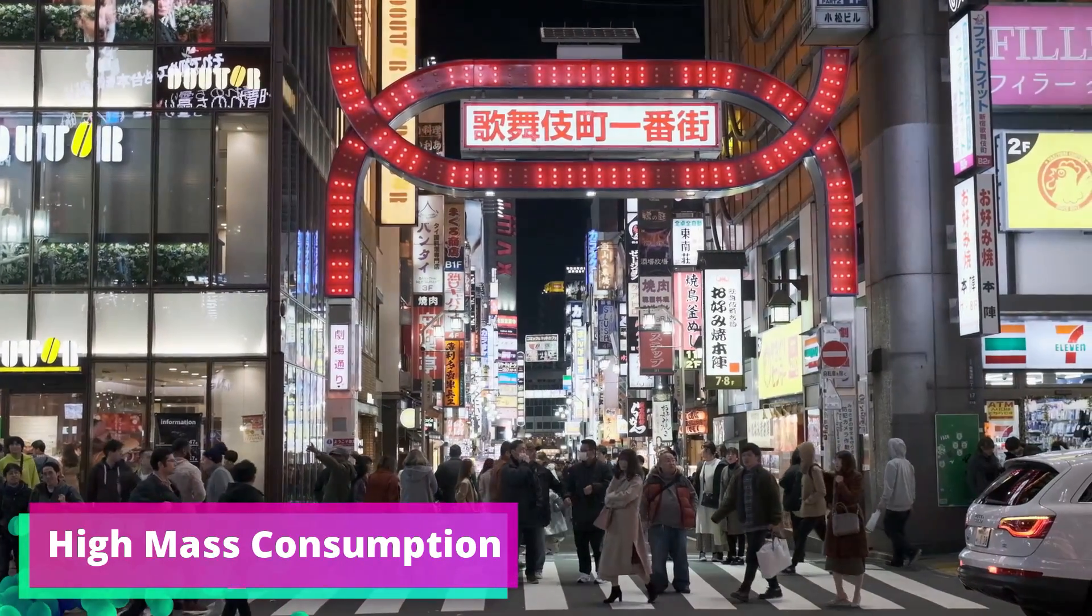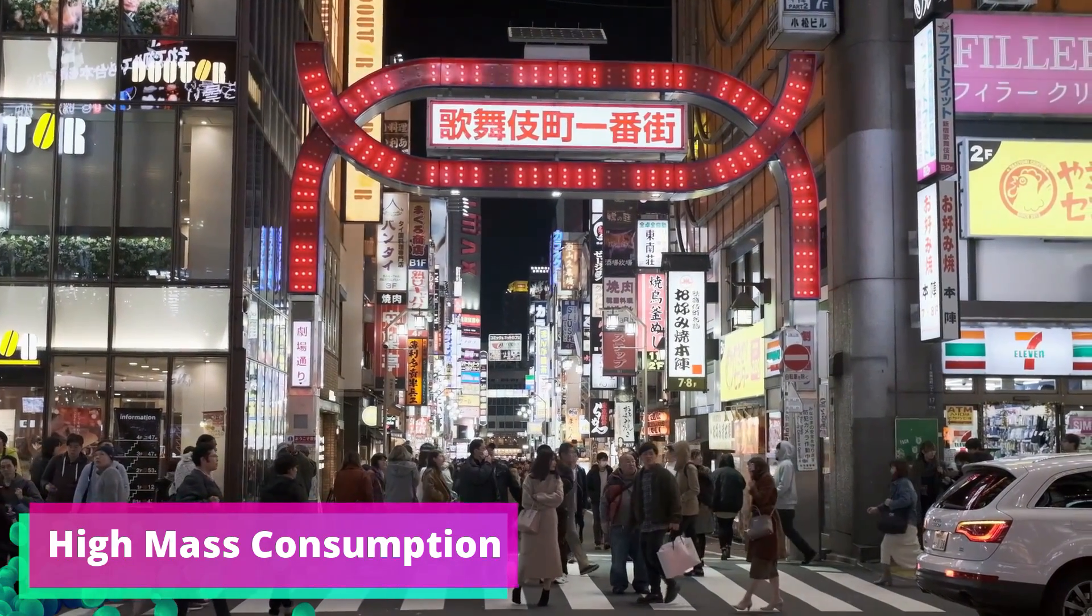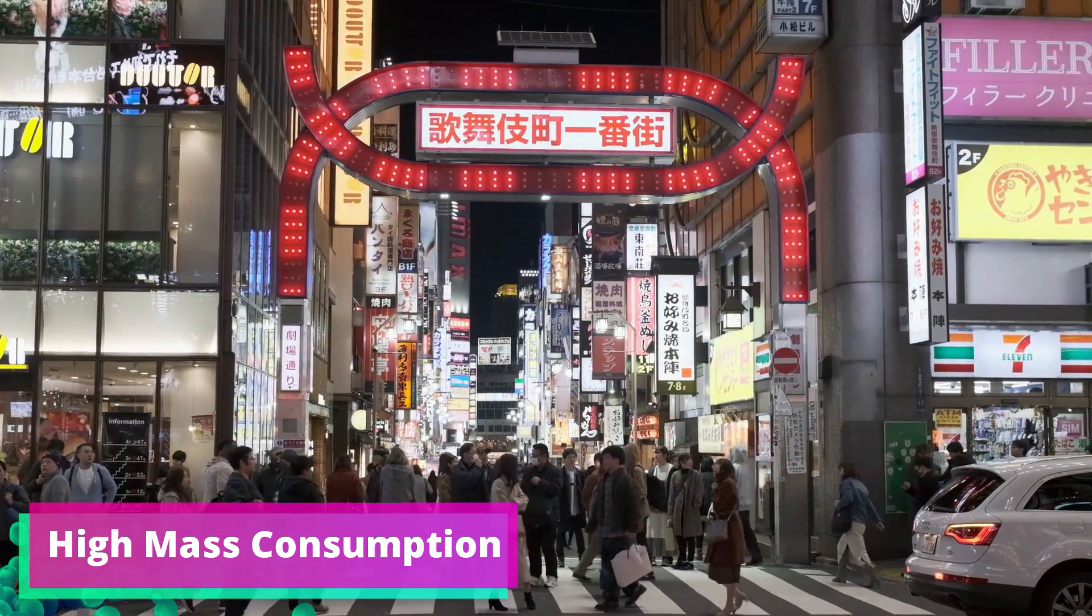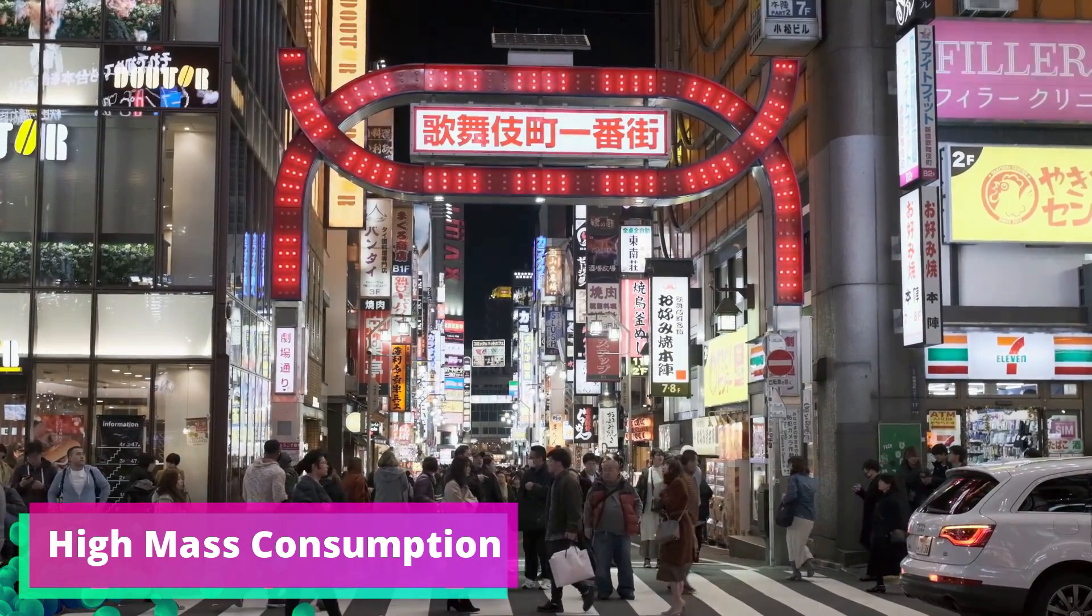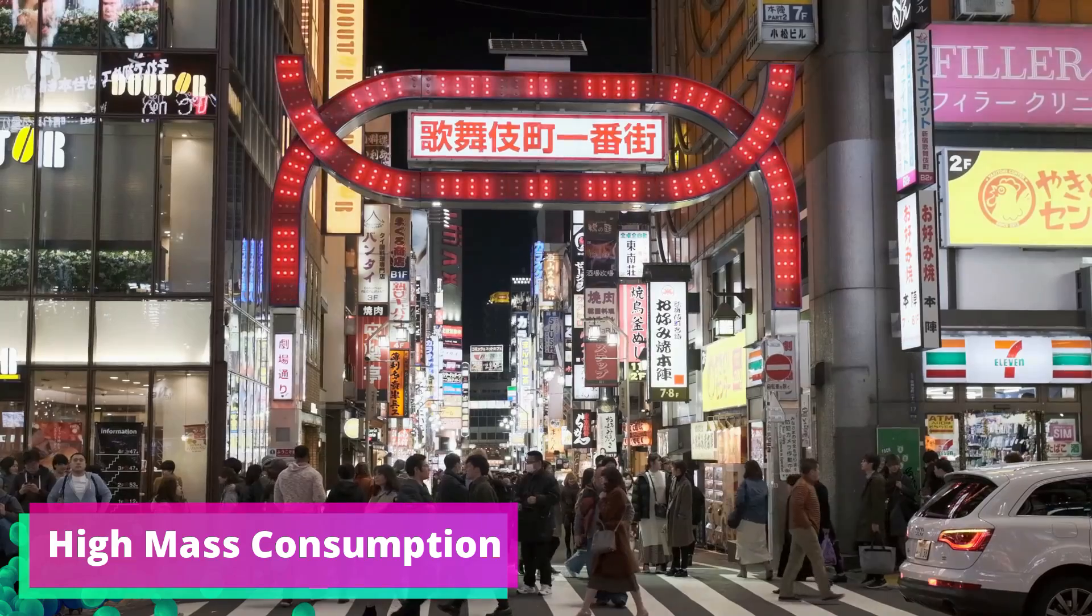Lastly, we have the age of mass consumption. Society now produces products that are no longer meeting the basic needs. We now have products that are being produced that meet the wants and needs of citizens. We also see that the majority of jobs now have started to move into the tertiary sector of the economy, and society is now fairly independent of outside states.